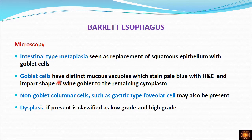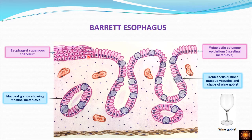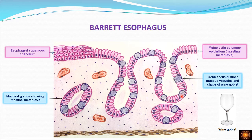We have columnar cells, goblet cells, and dysplasia may also be present, classified as low grade and high grade depending on cytological features. In the microscopic picture, you can see squamous epithelium and metaplastic columnar epithelium; the blue-colored structures are the goblet cells, which stain pale blue on hematoxylin and eosin. Because mucin is present in the cytoplasm, they assume the shape of a wine goblet — these cells have a similar shape due to mucin in the cytoplasm.